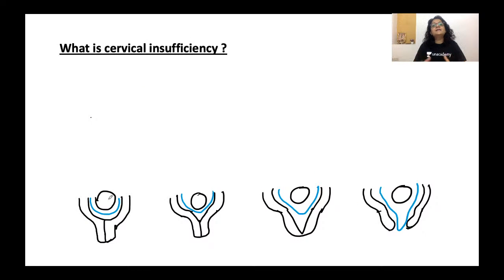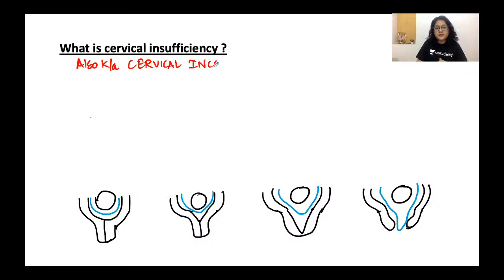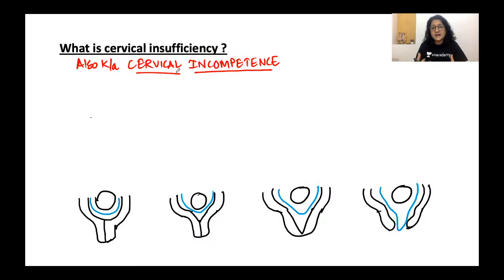What exactly is cervical insufficiency? It was previously called cervical incompetence. As the name suggests, the cervix is not competent enough to hold tight during pregnancy. The cervix is made up of mainly elastic tissue — only 10% of the cervix is muscle. So if there is cervical insufficiency or weakness of the cervix, the cervix just opens up.